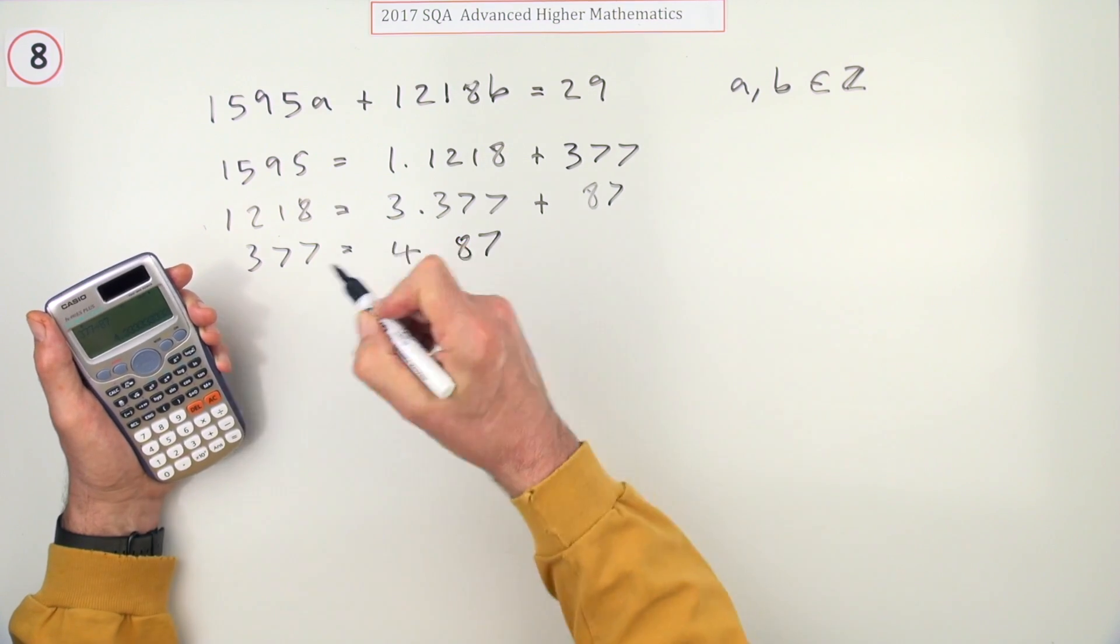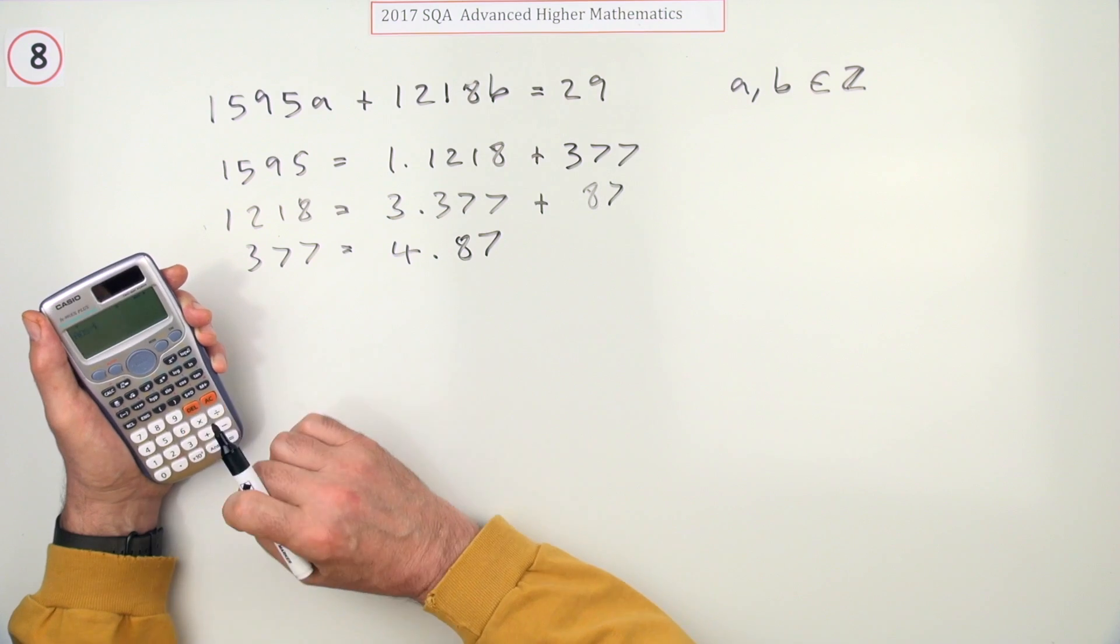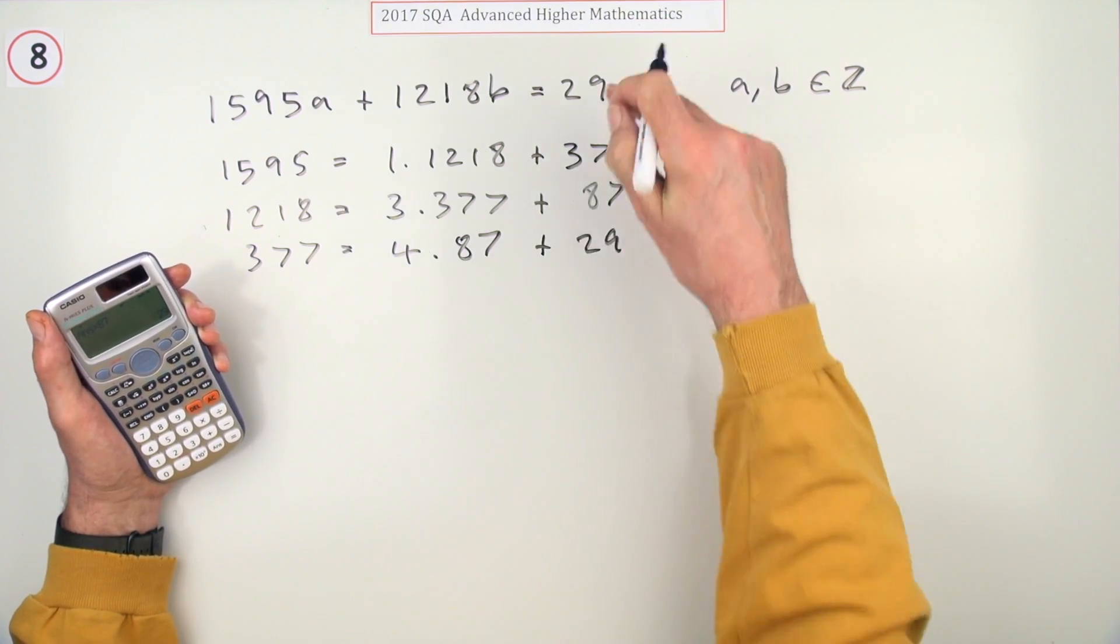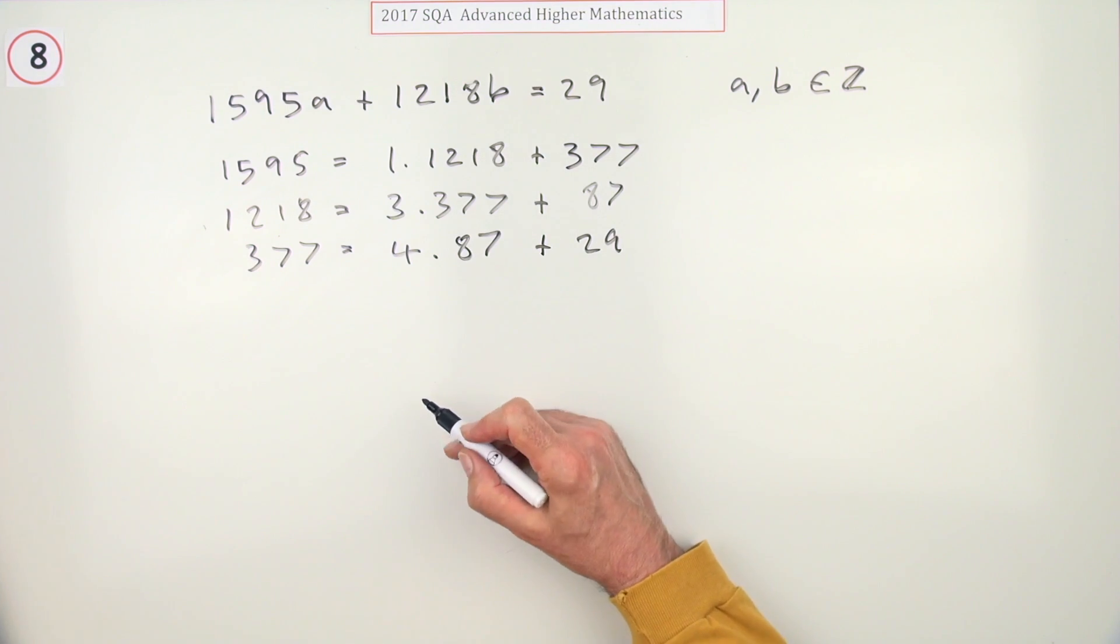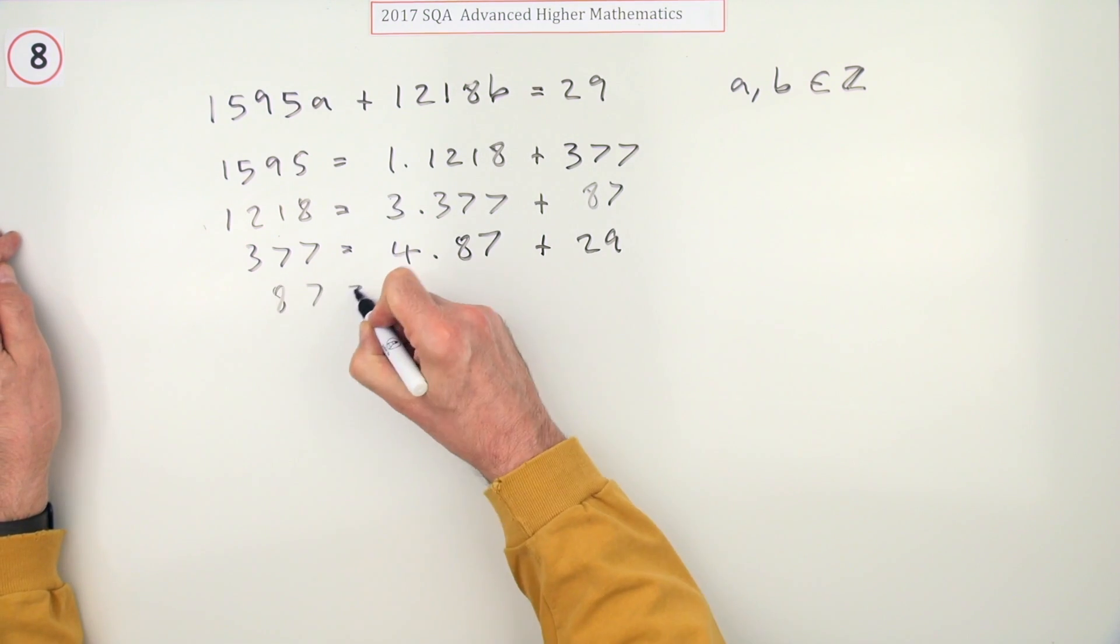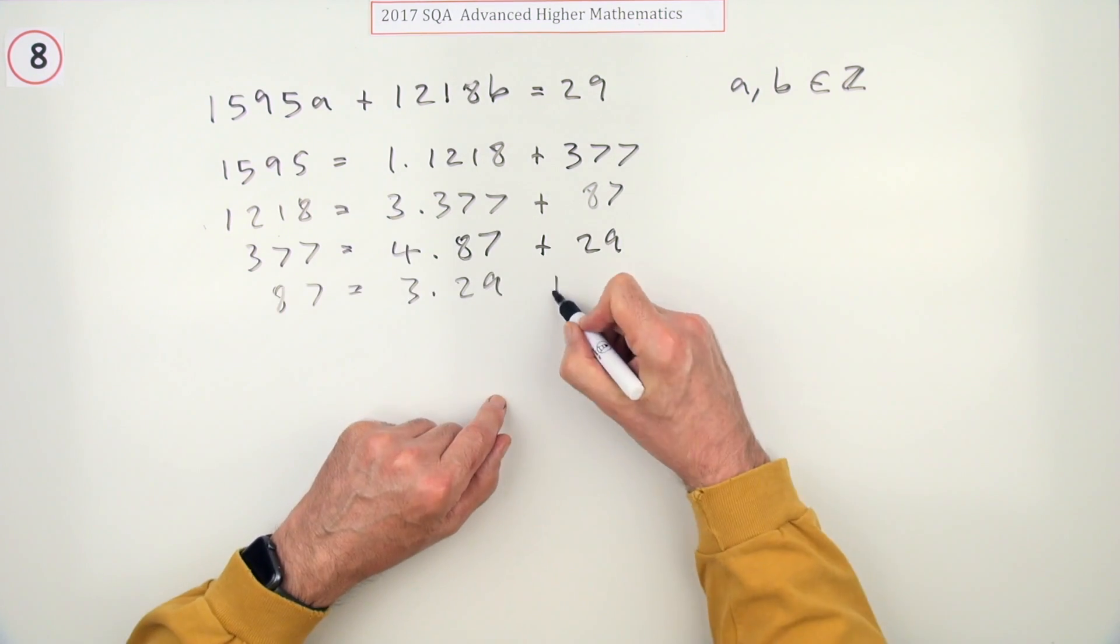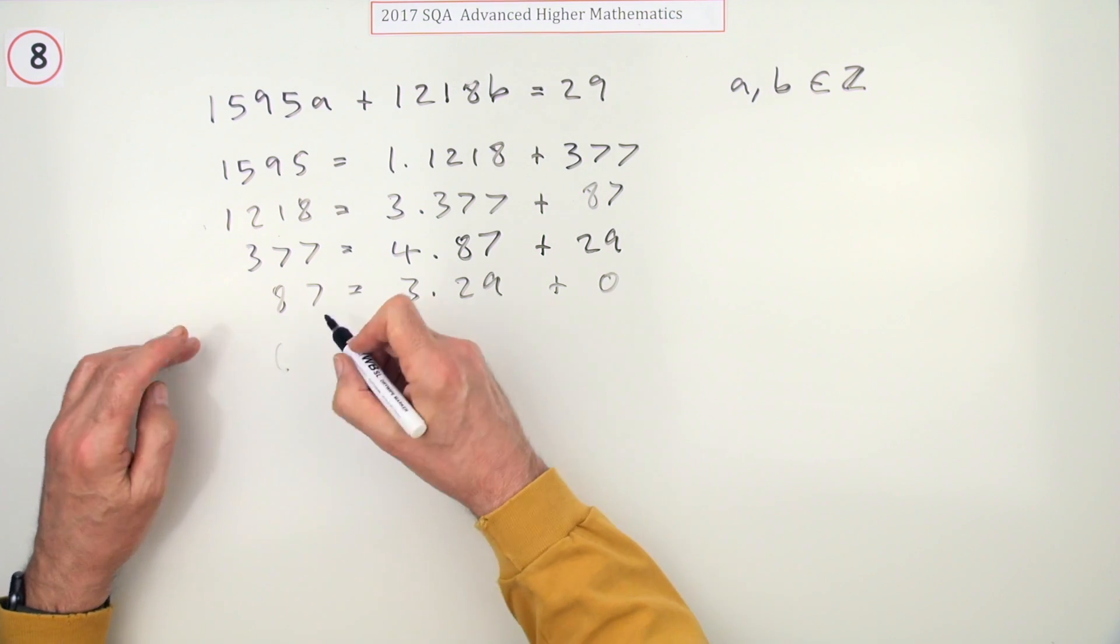And once again, it's a 4 this time, and that leaves 29. There you go, that's probably - in fact that is it, isn't it? That's three of them. 87 is 3 times 29, as the calculator knew all the way along, plus 0. So I know my greatest common divisor - doesn't actually need to state it, but I'll put it down anyway.